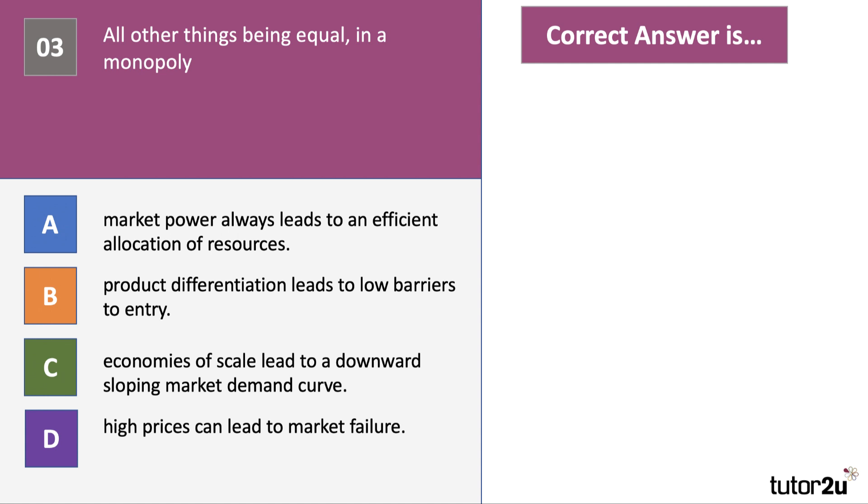So in this situation we're looking for a correct statement, ceteris paribus, all other things being equal in a monopoly. The answer there is D: high prices can lead to market failure. Market power does not always lead to an efficient allocation of resources. Indeed, monopoly power can lead to the price being lifted well above marginal cost, leading to a loss of allocative efficiency. Product differentiation leads to higher barriers to entry, and economies of scale lead to a downward sloping long run average cost curve, not the demand curve. So the answer is D. High prices can lead to market failure, in particular because consumers pay more than they would pay if the market was more competitive.